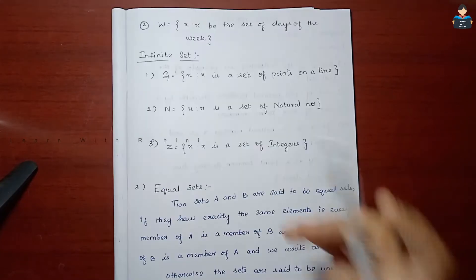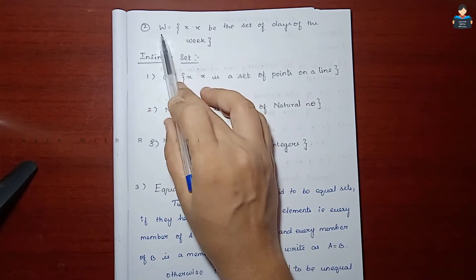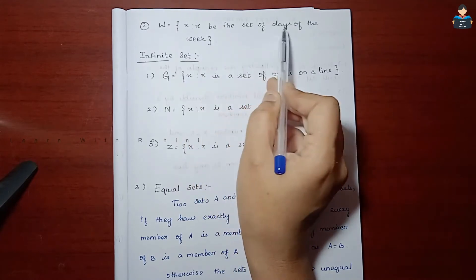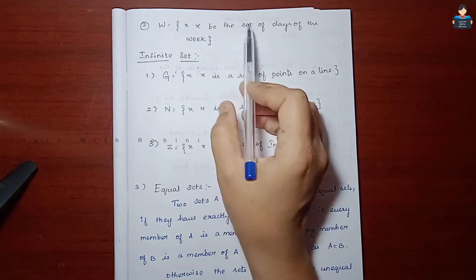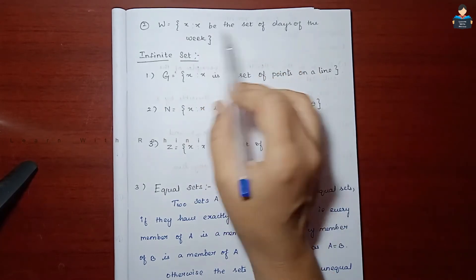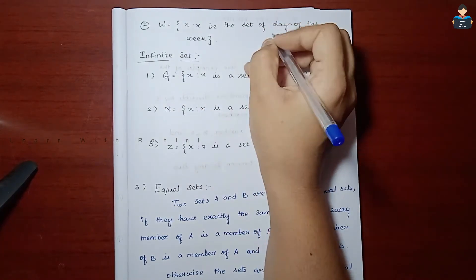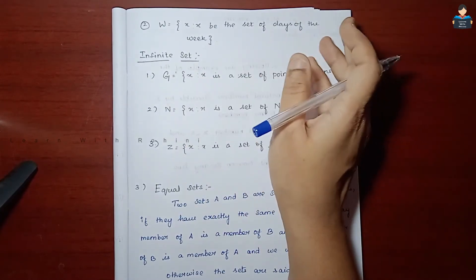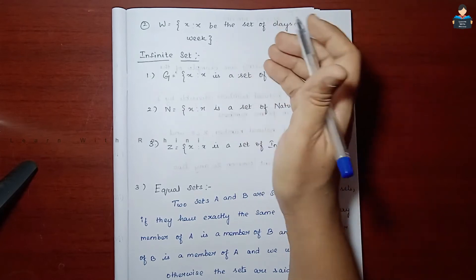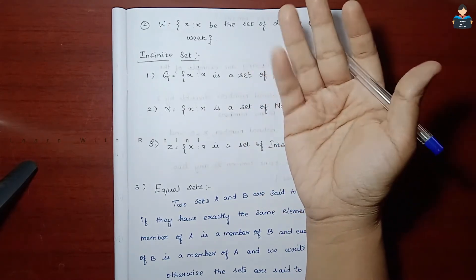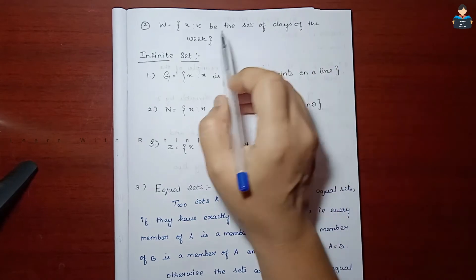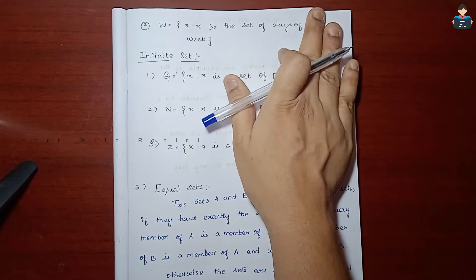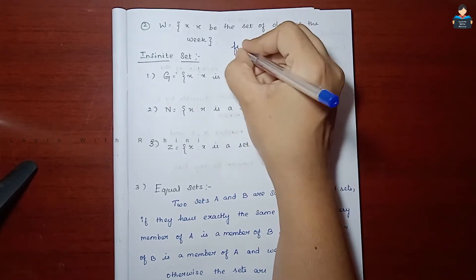The next example is set W = {x : x is a day of the week}. The set of days of the week has exactly 7 elements, so it is a finite set.